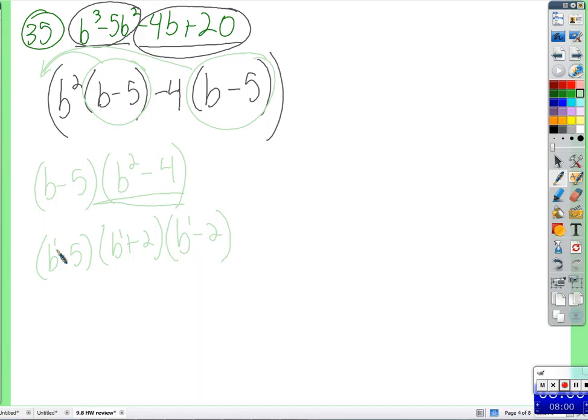About this? It's a difference of squares. B squared is a square. Four is a square. So we factor that difference of squares. B plus two, B minus two. And once you get down to where your B's are to the first power, that's what those are, those to the first power, there's no more factoring to do.